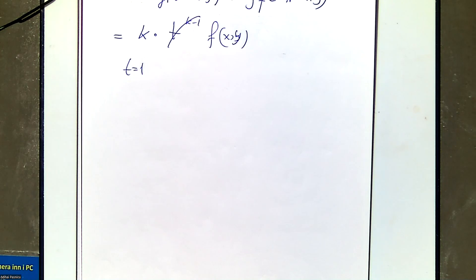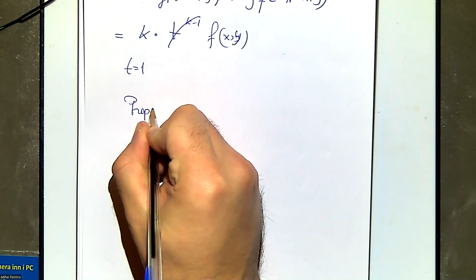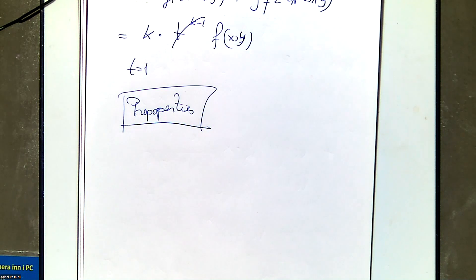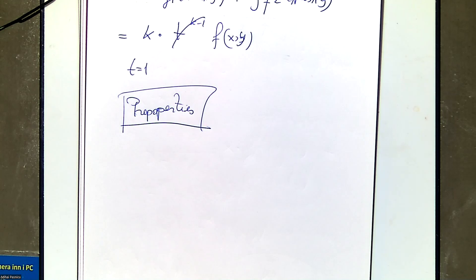For the other proofs, they're a little bit longer so I'm not a fan. I'll just put the properties, and if you want to see the proofs we can talk afterwards. I do not advise you to memorize these properties under any circumstances. I do urge you to know what a homogeneous function is and what the idea is behind it - that is extremely important. If you want to do economics, knowing what homogeneous and homothetic functions are is very important.